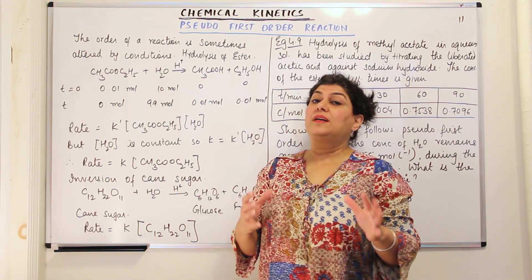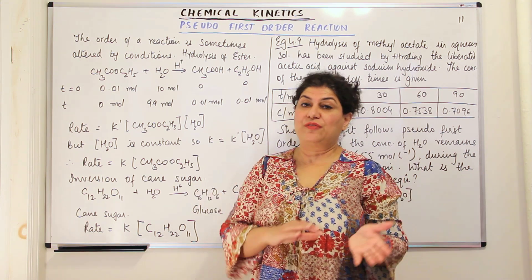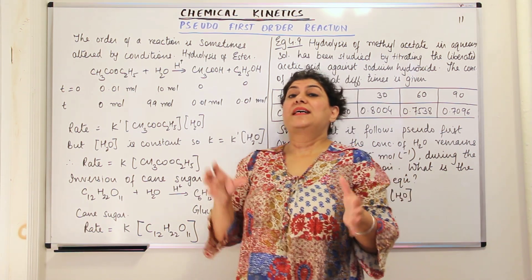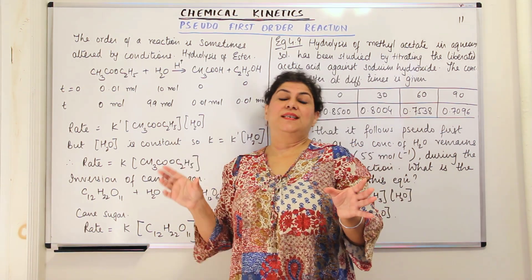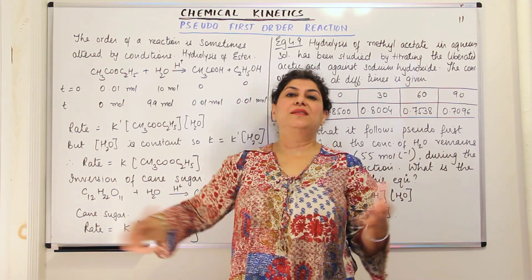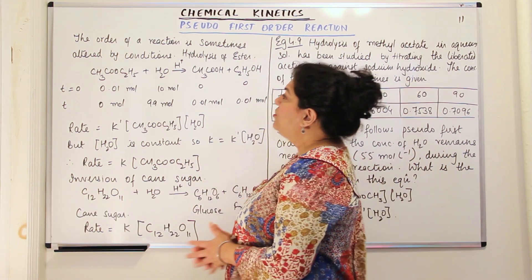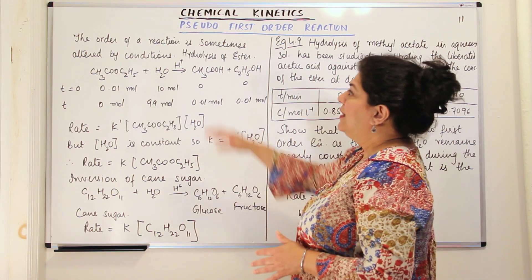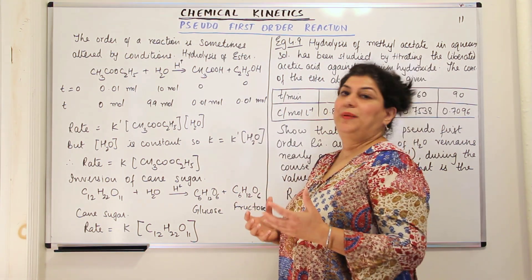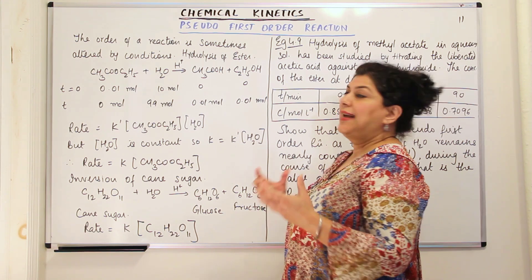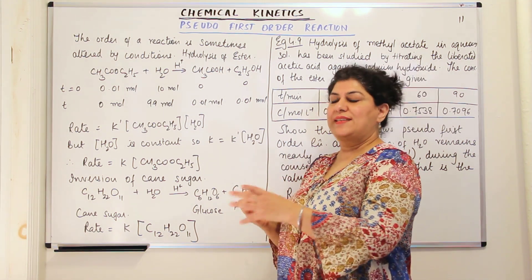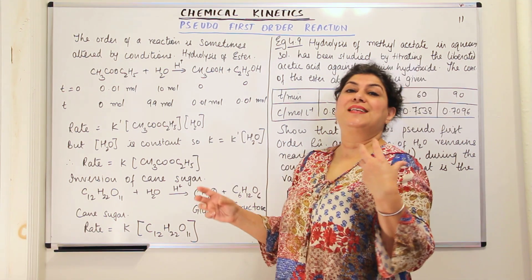The concentration of that reactant is of course contributing towards the reaction, but its quantity is not affecting the rate of the reaction because it is present in excess. The order of a reaction is sometimes altered by the conditions — that is when one of the reactants is present in excess.